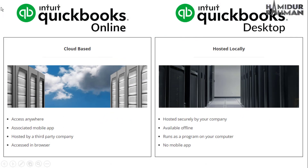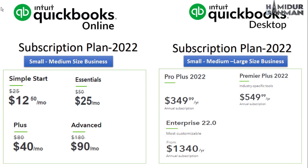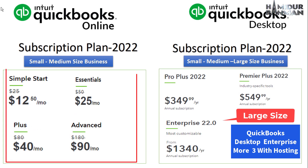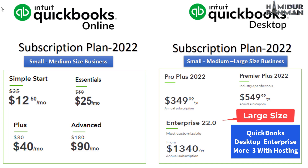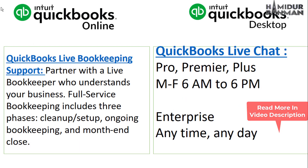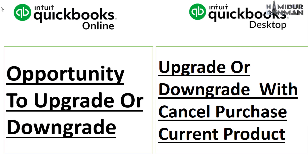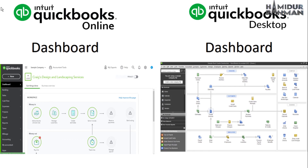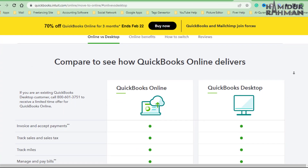Now let's see the key differences between QuickBooks Online and Desktop. Online is cloud-based, but Desktop is installed and hosted on a PC. For subscriptions, Online has four levels, including one for self-employed freelancers, while Desktop has three level plans. All plans have different features enabled at different prices. QuickBooks Online has live bookkeeping support, and Desktop has live chat within a time limit. You can upgrade or downgrade in both Online and Desktop, but in Desktop you must cancel the current plan first.